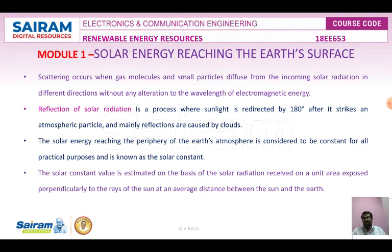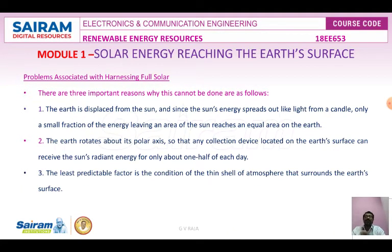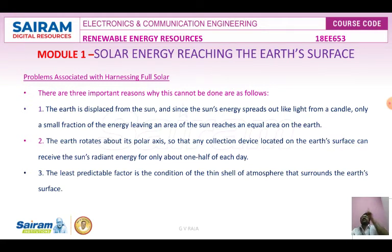What are the problems associated with harnessing the full solar energy? There are three important reasons why we cannot extract the full solar energy. First, the Earth is displaced from the Sun, so the Sun's energy spreads out like light from a candle — only a small fraction of energy leaving the Sun's surface reaches an equal area on Earth. Second, the Earth rotates about its polar axis, so any collection device on the Earth's surface can receive solar radiation for only half of the day.